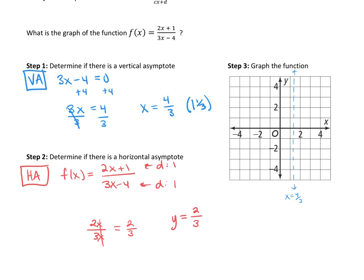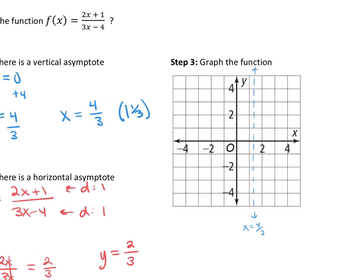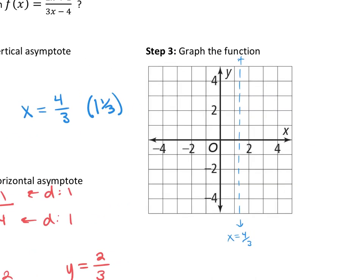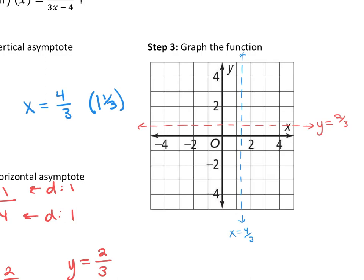So we go to our graph. That's between 1 and 2. No, it's not. It's between 0 and 1. And it's 2 thirds of the way through and it's horizontal. So it's going to be right about there, just a little bit above halfway. That's our horizontal asymptote of y equals 2 thirds.